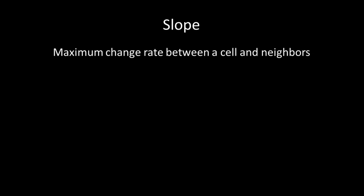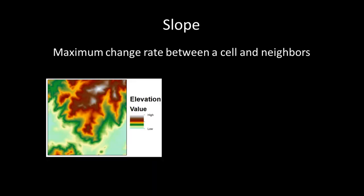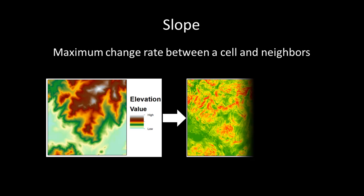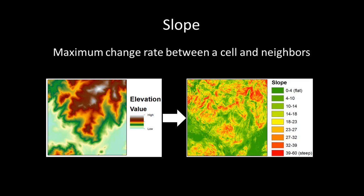Slope is the idea of calculating the maximum change rate between a cell and its neighbors. For example, given a digital elevation model of a mountainous area, after the slope tool runs, an output is created indicating the degree of change between cells. Slope is commonly used with elevation datasets and in site selection problems where it is necessary to determine flat areas.